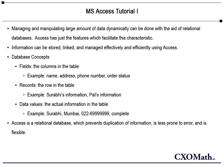Records are essentially the rows in the table. For example, Suruby's information, Pat's information, or John's information would be stored in a row. Data values are the actual information in the table. For example, the address of someone, their phone number, or their email are considered to be actual data values.